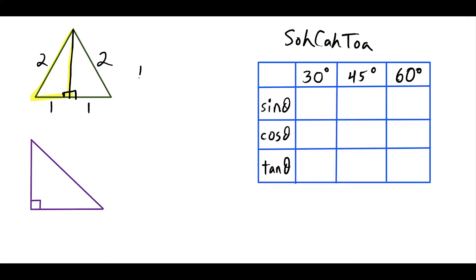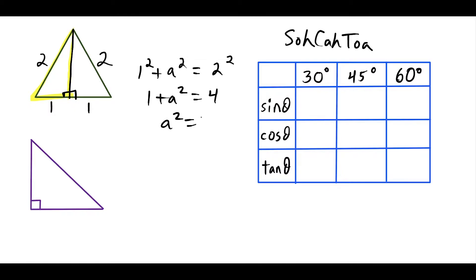We set up the equation: one squared plus A squared is equal to two squared. That gives us one plus A squared equals four, which means A squared equals three after we subtract one from both sides. So A is equal to square root three.